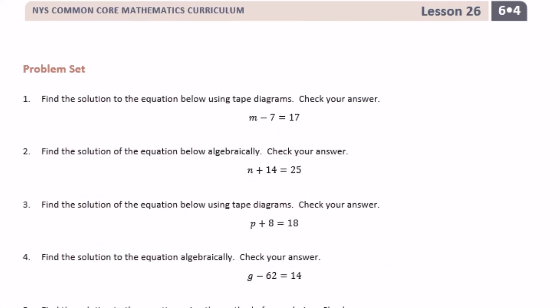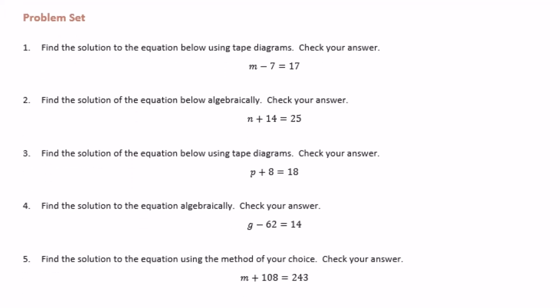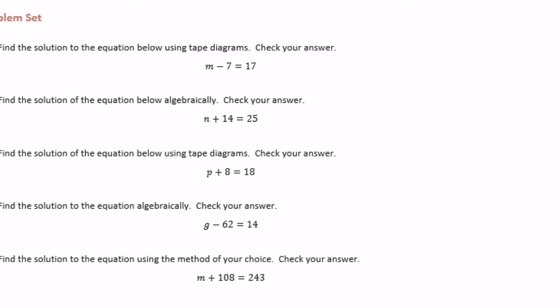6th grade module 4, lesson 26 problem set, number 1. Find the solution to the equation below using tape diagrams and check your answer. So M minus 7 equals 17. We need to use a tape diagram to show this.